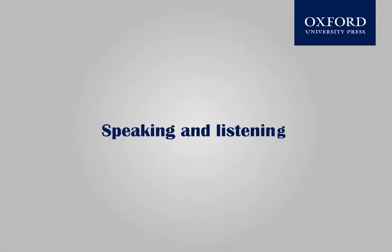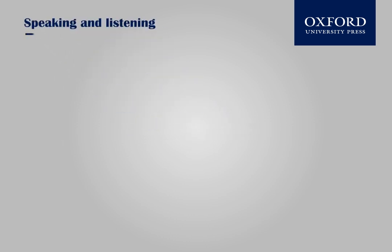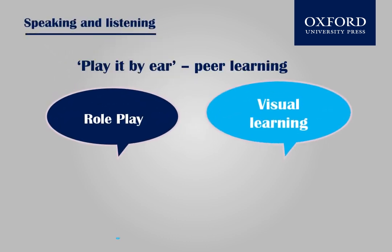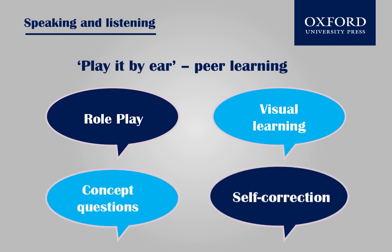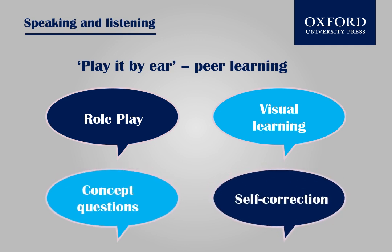Next, we move on to speaking and listening. Grammar is often played by ear, which means that students learn to discover rules and recognize patterns from what they hear and what they read. This is usually done through peer learning. When children listen to sentences, if they sound odd or incorrect, they're probably incorrect.